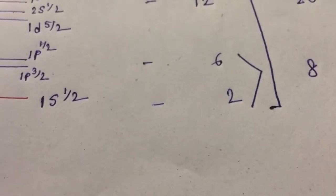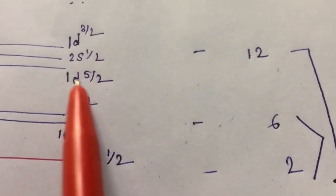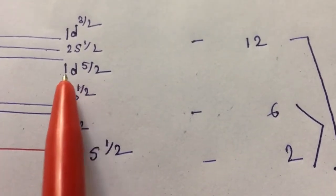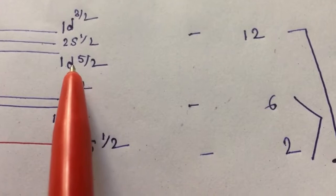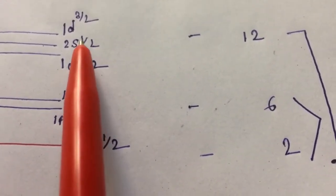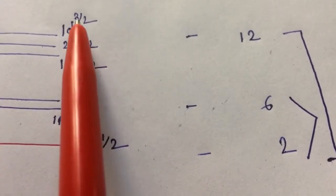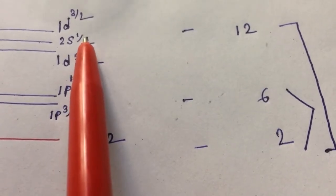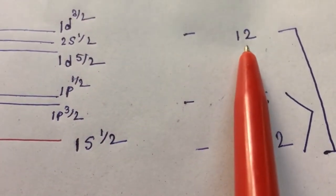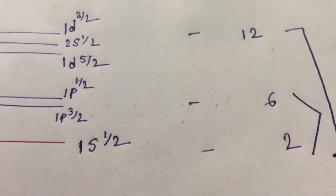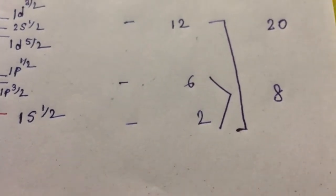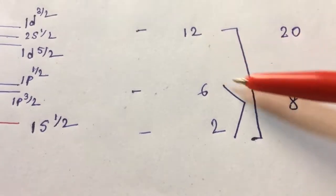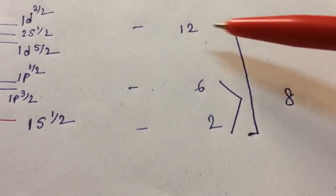For these two energy levels, the total number of nucleons is 8. If we look at these energy states for protons: for 1d5/2 there are 6 protons, for 2s half there are 4 protons, for 1d3/2 there are 2 protons. So 6 plus 2 plus 4 adds to 12. 12 plus 8 is equal to 20.